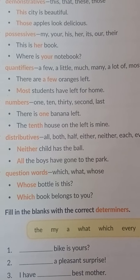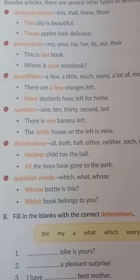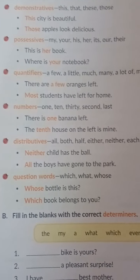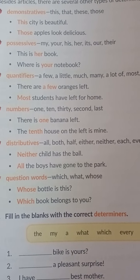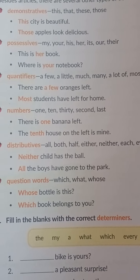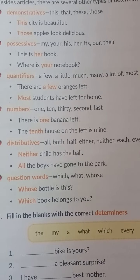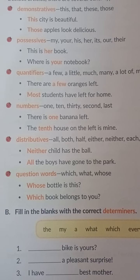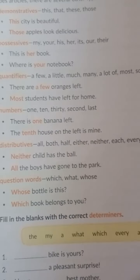Most students have left for home. Numbers indicate the number — one, ten, thirty, second, last. For example: 'This is one banana left,' 'The tenth house on the left is mine.' These are numeral determiners.